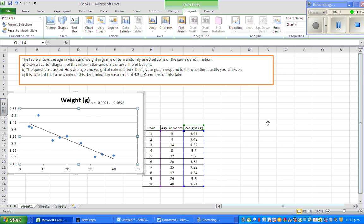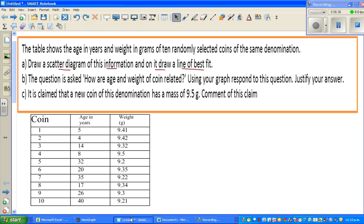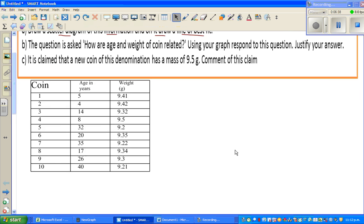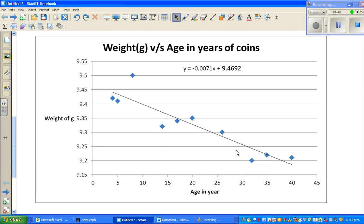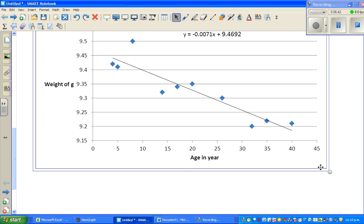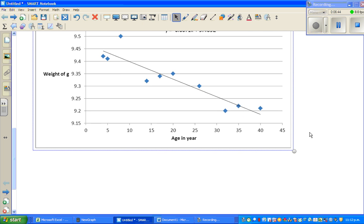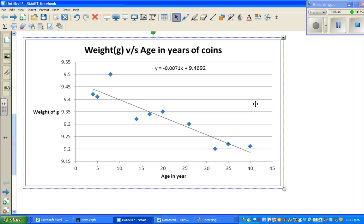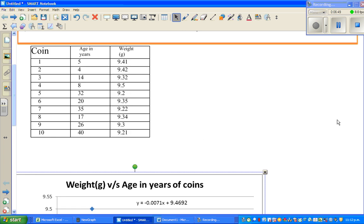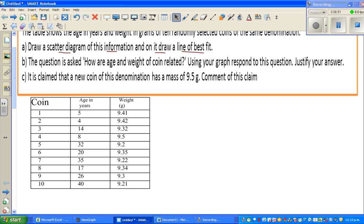Now let's answer the question. So we have drawn the scatter graph and we have drawn the line of best fit. We have also written the equation of the line. We didn't need to, but I have written the line of best fit or the equation of the line of best fit.